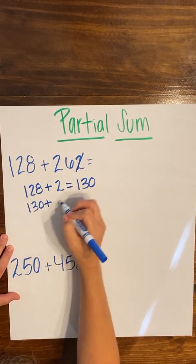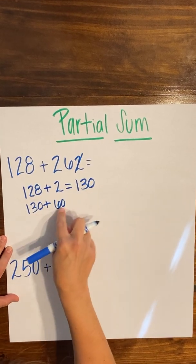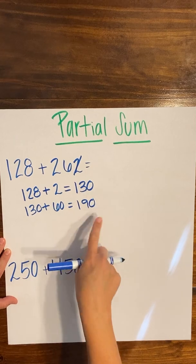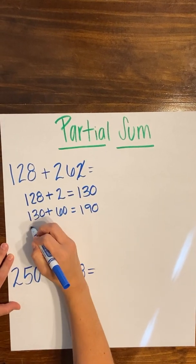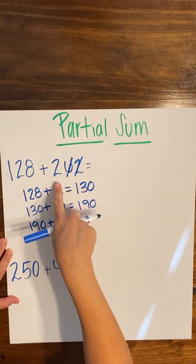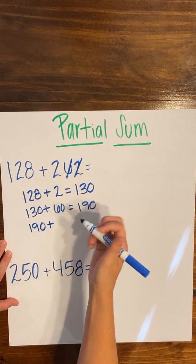But that's going to end up being 130 plus 60, which is going to give me 190. Now I'm going to bring that sum down and use it to add the remainder of my problem, which is two in the hundreds place.